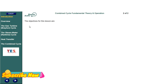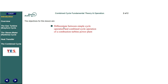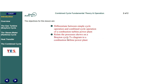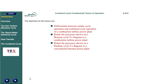The objectives for this lesson are: 1. Differentiate between simple cycle operation and combined cycle operation of a combustion turbine power plant. 2. Relate the processes shown on a Brayton cycle T-S diagram to a combustion turbine power plant. 3. Relate the processes shown on a Rankine cycle T-S diagram to a conventional thermal power plant. 4. Describe factors affecting heat transfer and HRSG efficiency.